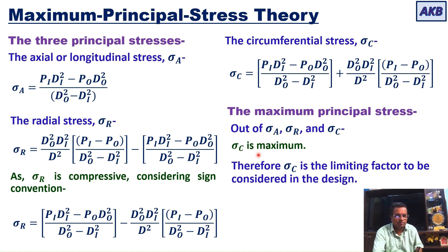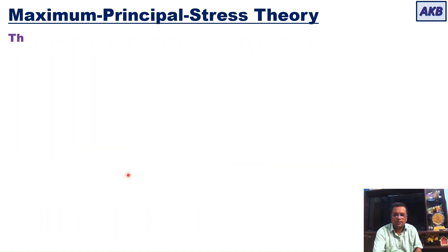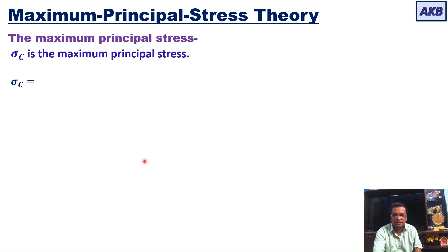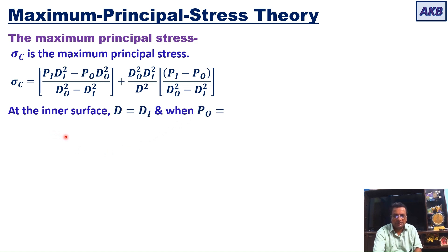Since sigma c is the maximum principal stress, it is the limiting factor to be considered in design. Design according to this theory will be based on sigma c. The equation for sigma c is: sigma c = (pi·di² − po·do²)/(do² − di²) + (do²·di²/d²)·(pi − po)/(do² − di²). At the inner surface we replace d with di. High pressure vessels are mostly subjected to internal pressure, so external pressure po is zero.